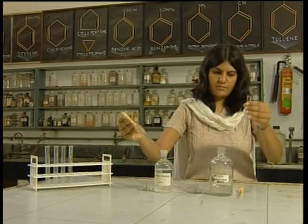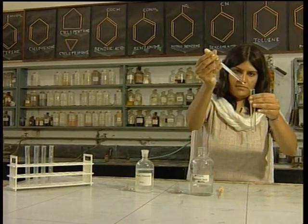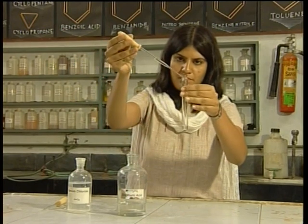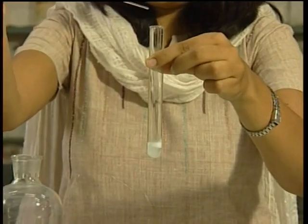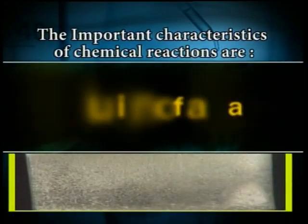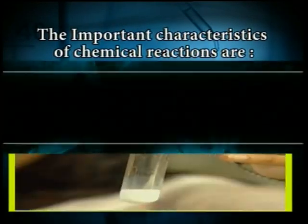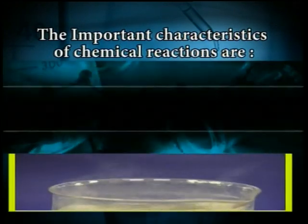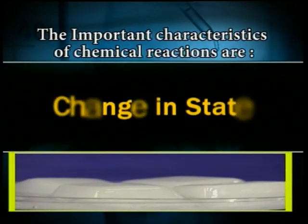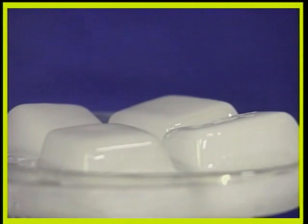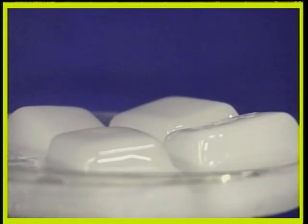When a chemical reaction takes place, there are some features that we can observe very easily. These features are known as the characteristics of the chemical reaction. The important characteristics of chemical reactions are: one, evolution of a gas; two, formation of a precipitate; three, change in color; four, change in temperature; five, change in state. Any one of these general characteristics can tell us whether a chemical reaction has taken place or not.